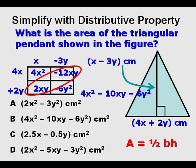So is that going to give us as our answer B? Well, the thing we have to remember, and this is where it's easy to make a mistake, is the formula for area of a triangle is 1 half base times height. So we need to multiply this expression times 1 half or divide by 2. And when we do that, we get 2x squared minus 5xy minus 3y squared. And so our answer is D.